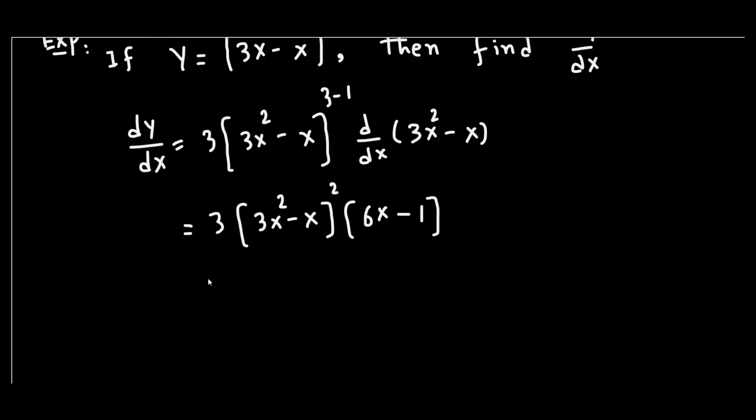This is the answer. This is how we can apply the generalized function rule. If you want, you can further expand this by expanding the formula and multiplying 3 times the expansion times (6x - 1). Otherwise, this is okay to this end.